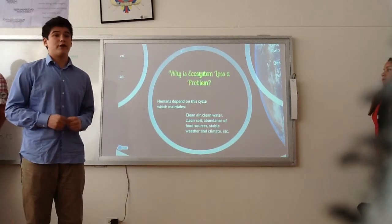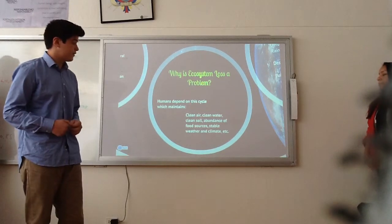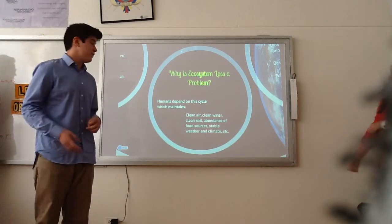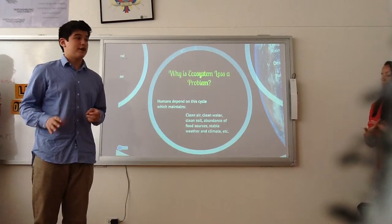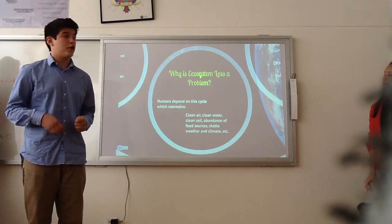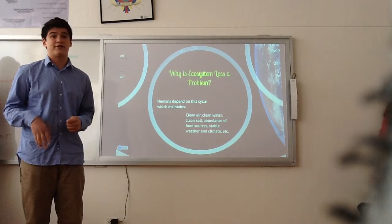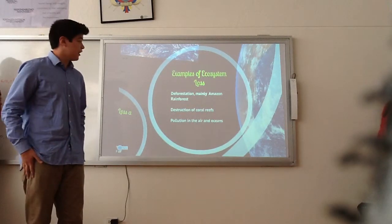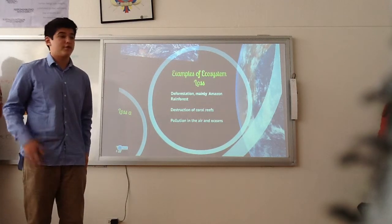So why is it a problem? Humans depend on the ecosystem for various resources that are crucial to life: clean air, clean water, clean soil, abundance of food resources, and stable weather and climate are all vital. Ecosystem loss is increasingly contributing to the decline of each of these. The rapid increase in human population demands a lot more of these resources, and at the current rate we're consuming them, it will be unachievable to maintain enough resources to sustain that many people. Examples of ecosystem loss include deforestation, destruction of coral reefs, and pollution in the air and ocean.